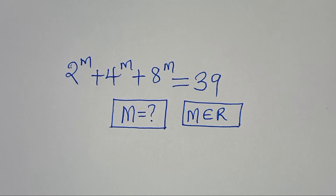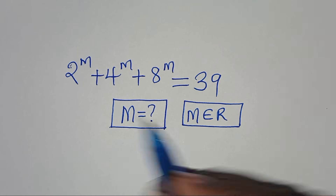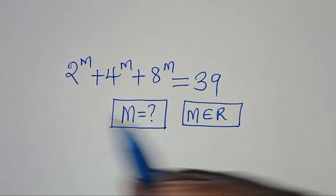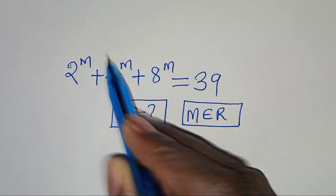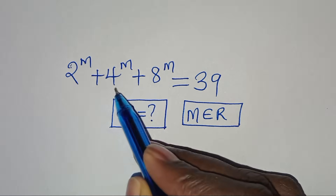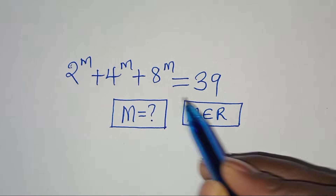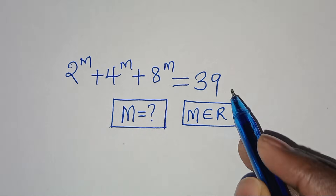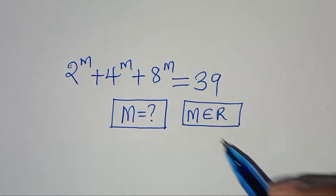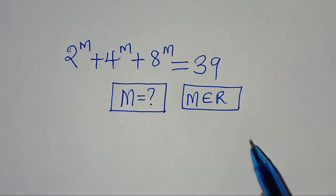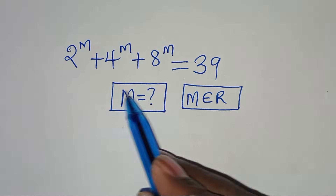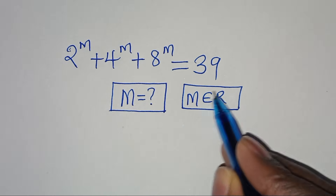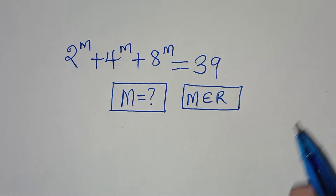Hello everyone, you are welcome to solve this nice algebra problem, which is 2 to the power of m plus 4 to the power of m plus 8 to the power of m, this is equal to 39. So what is the value of m, given that m is a member of real numbers?